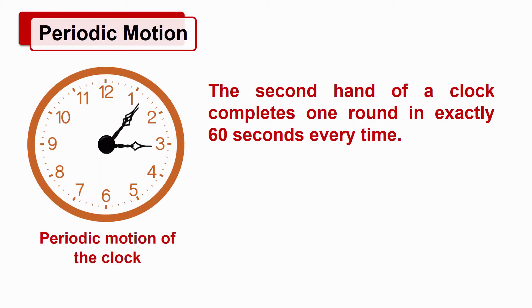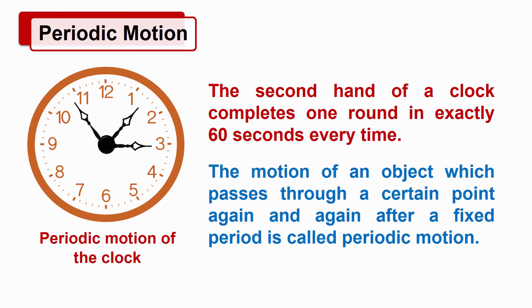Periodic motion. We know the second hand of a clock completes one round in exactly 60 seconds every time. Such a motion is periodic motion. The motion of an object which passes through a certain point again and again after a fixed period is called periodic motion.